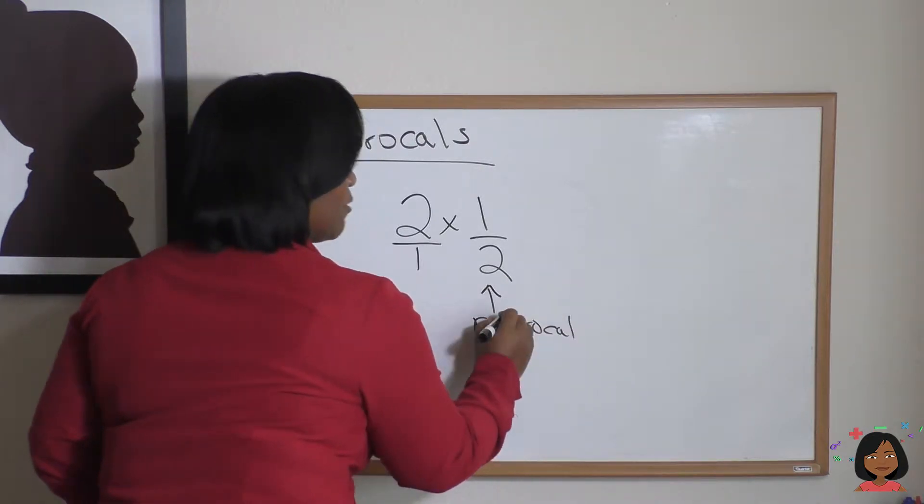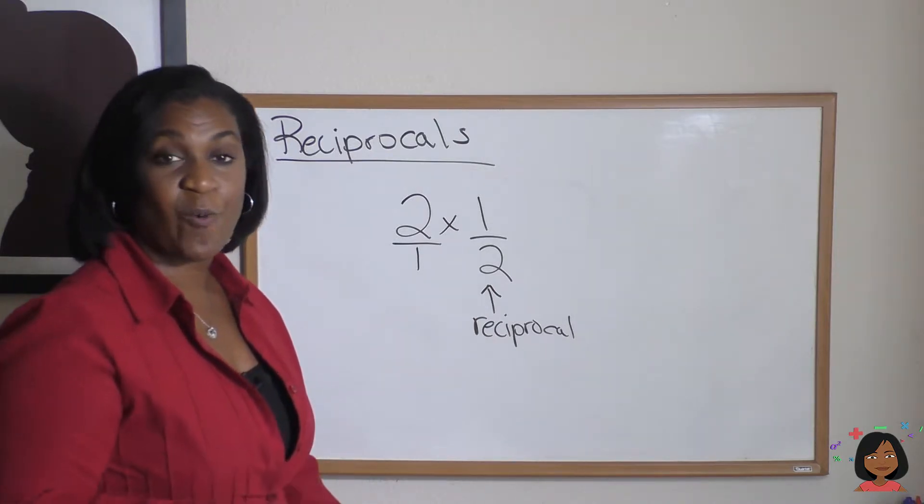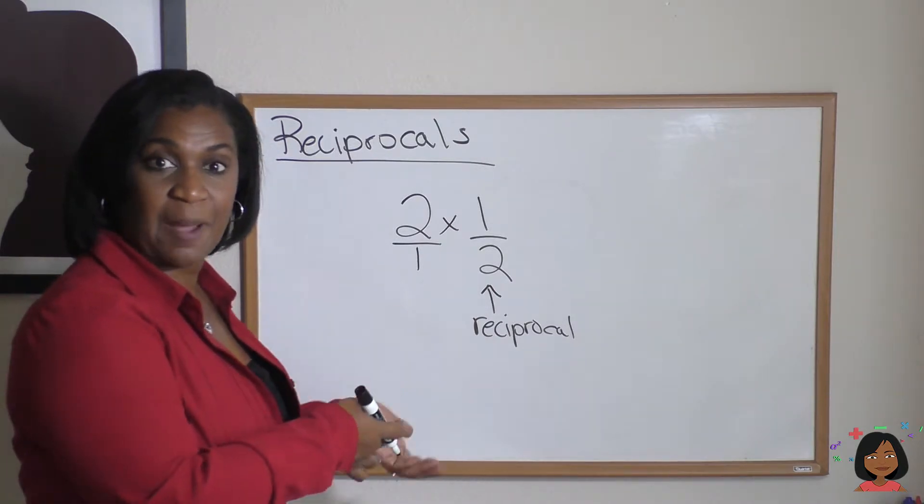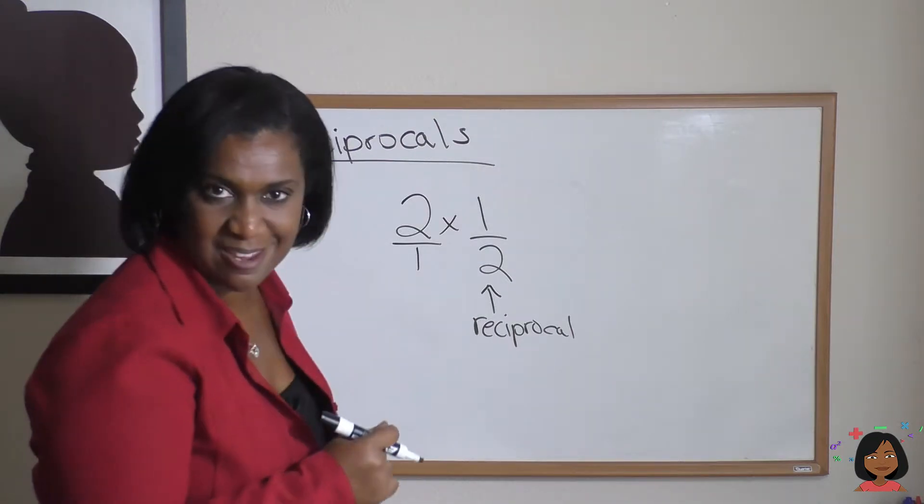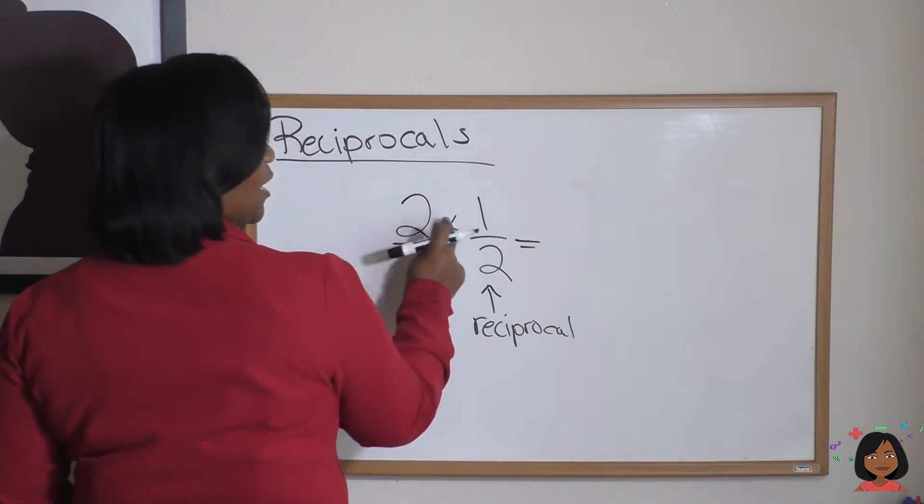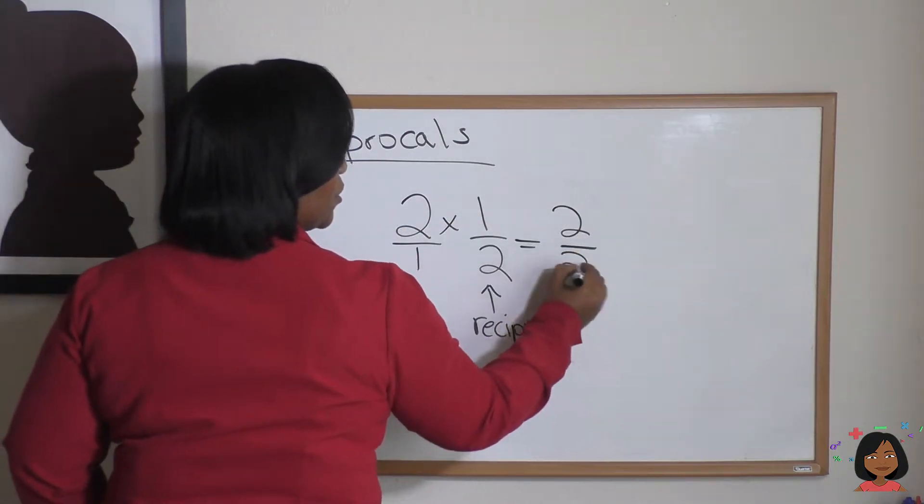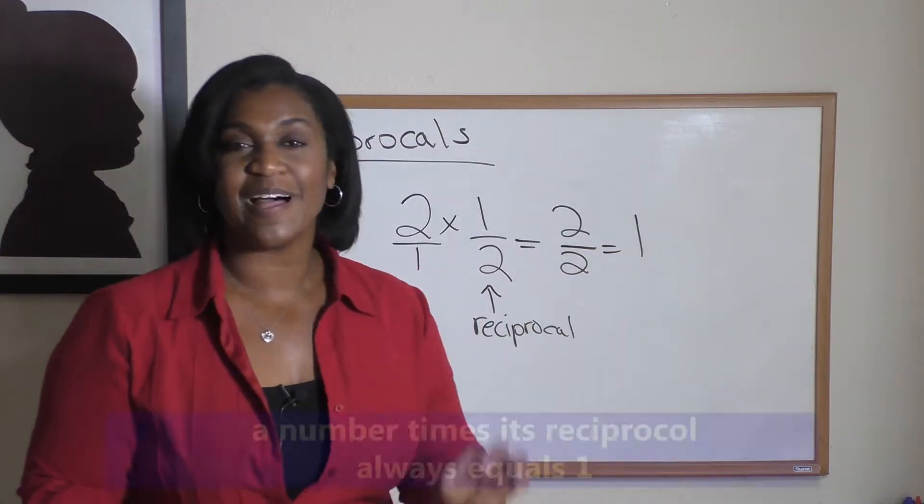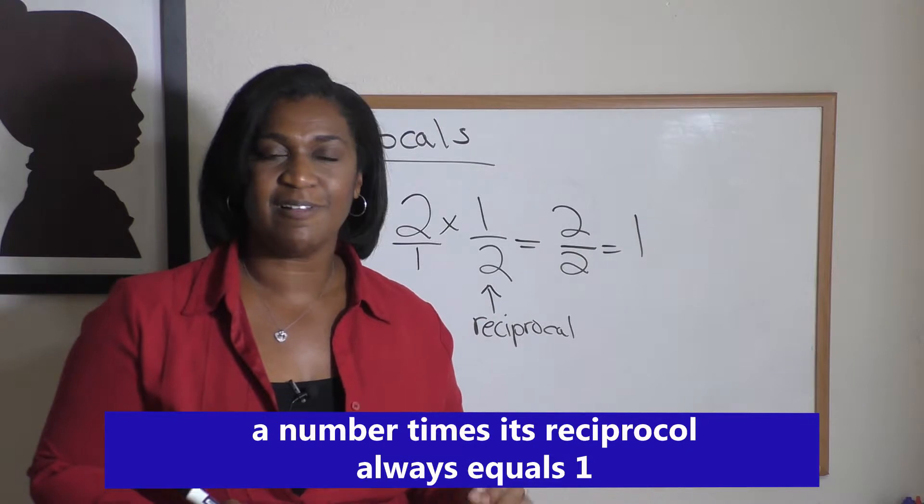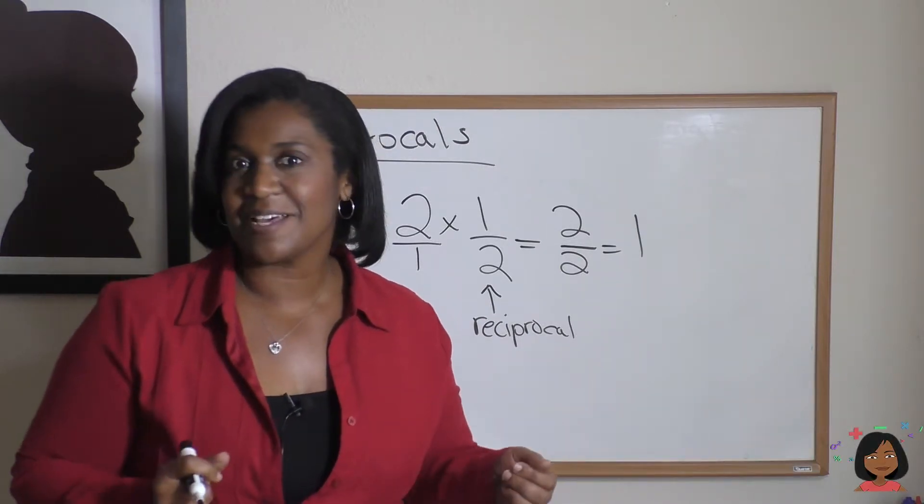Now you might be wondering, why did you have a multiplication sign there? Well, if you multiply a number times its reciprocal, you will always get the same answer. Watch: 2 × 1 is 2, 1 × 2 is 2, 2/2 equals 1. If you multiply a number times its reciprocal, the product will always be 1. Let's give you another example.